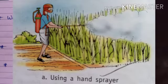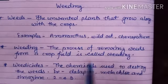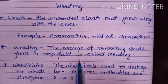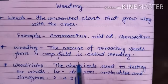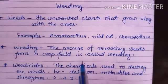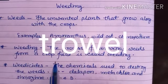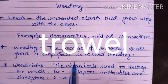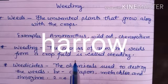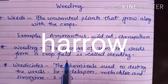Weeding can be done manually by pulling the weeds out of the field by hand, or by using a trowel or a harrow to uproot them.